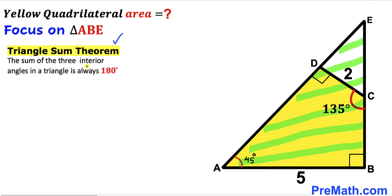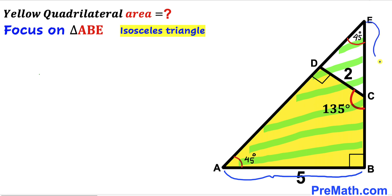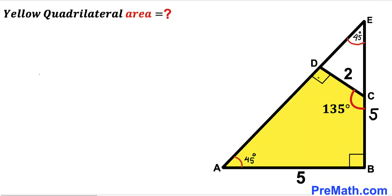Using the triangle angle sum theorem — the sum of three interior angles in a triangle is always 180° — and knowing angle BAD is 45° and angle ABE is 90°, angle BEA must be 45°. Therefore triangle ABE is an isosceles triangle, and side AB equals side BE. Since AB is 5 units, BE is also 5 units.